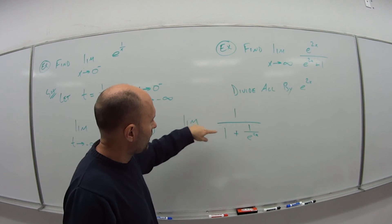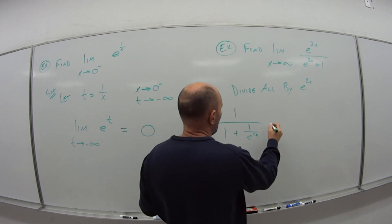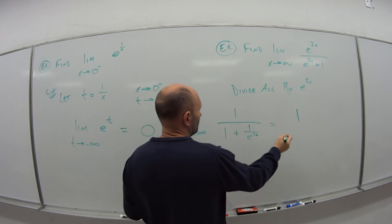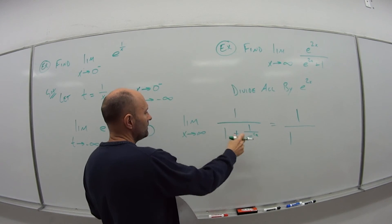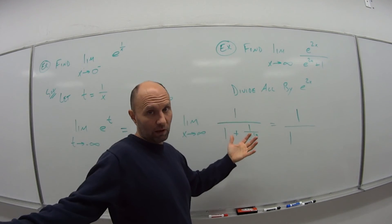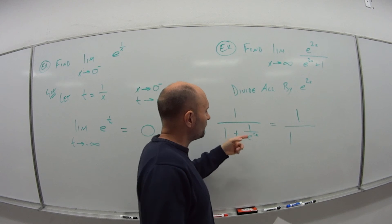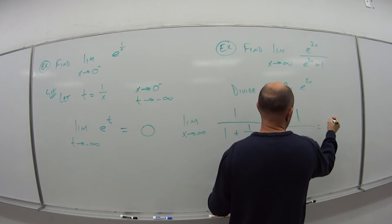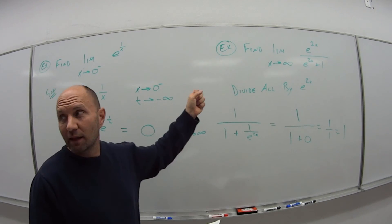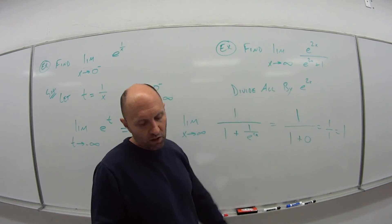Now as I do this limit, I'm just going to take the limit of each piece. The limit as x goes to infinity of 1 is just 1. The limit as x goes to infinity of 1 is still just 1. And then here, as x goes to infinity, the number in the denominator gets large, goes to infinity. 1 over a really large number, this goes to 0. So this becomes 1 over 1, which is just 1. The limit as x goes to infinity of that function is equal to 1.